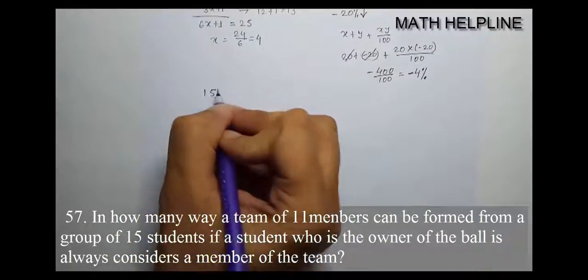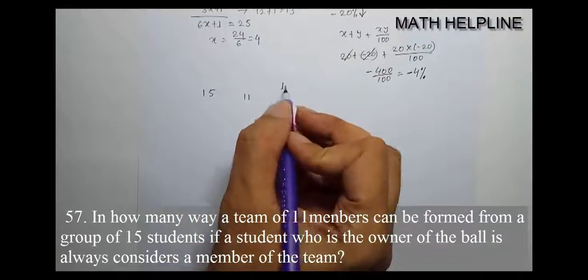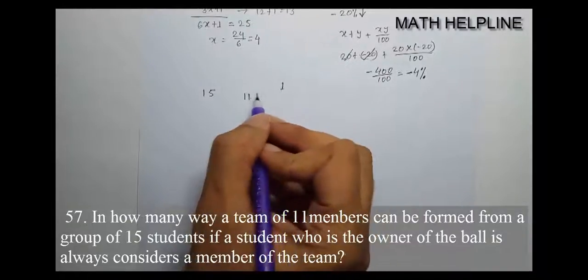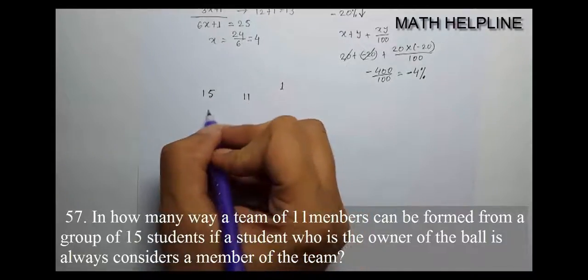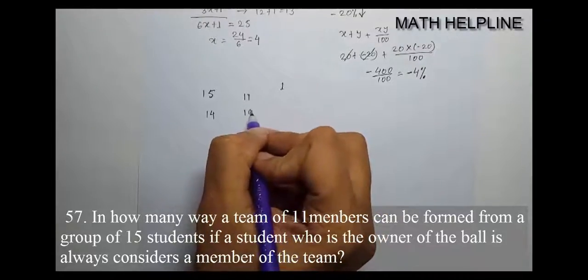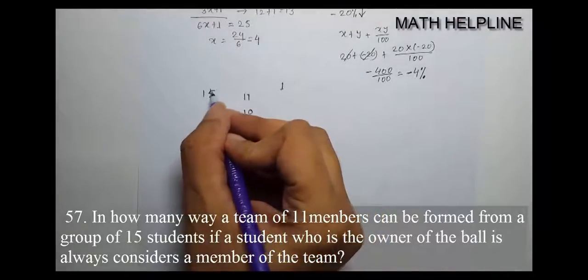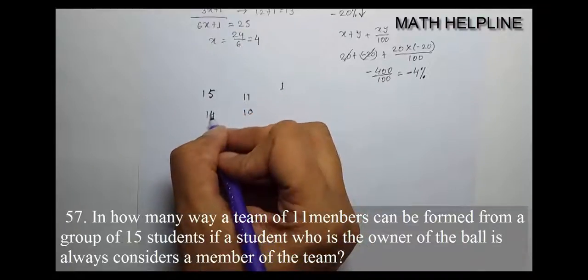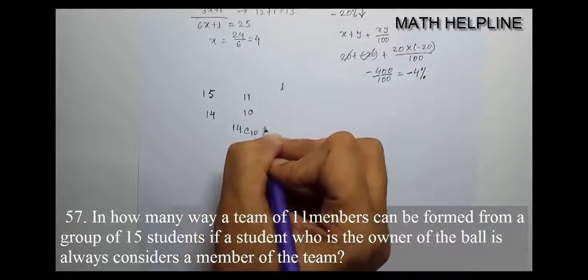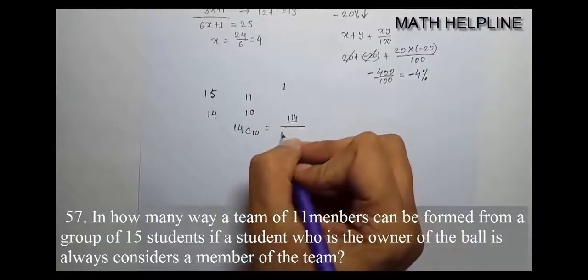So we have 15 students and need to form a team of 11. One student who owns the ball must be on the team. So that student is already selected. Now we need to select 10 more from the remaining 14 students.